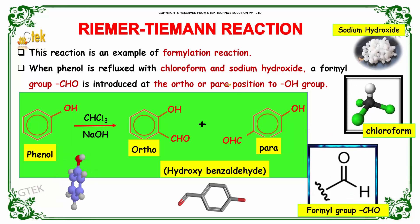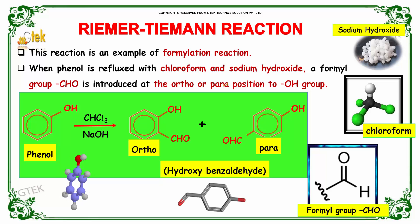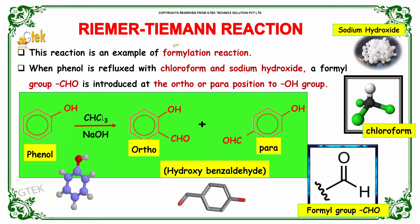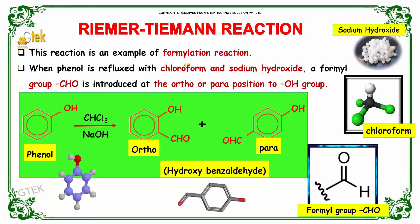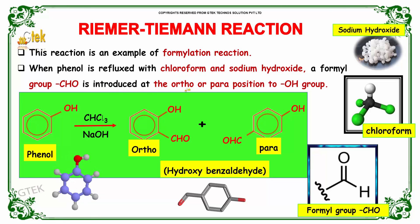Now let us study about the Reimer-Tiemann reaction. This reaction is an example of a formylation reaction. When phenol is refluxed with chloroform and sodium hydroxide, a formyl group CHO is introduced at the ortho or para position to the OH group.